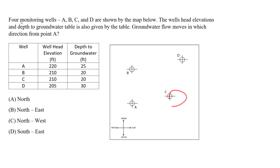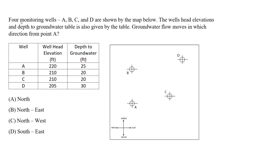Here is our map showing wells A, B, C, and D. The wellhead elevations and depth to the groundwater table are given in the table. We want to determine in which direction the groundwater flows from point A.